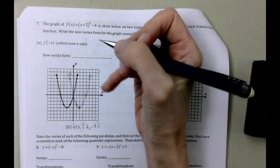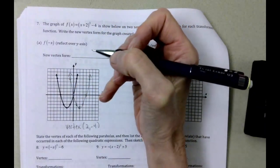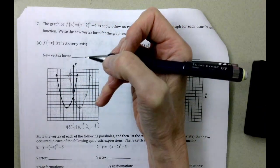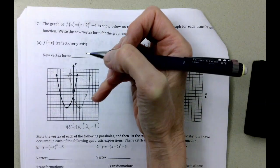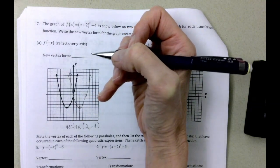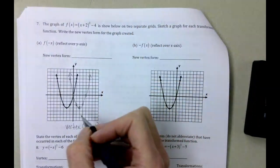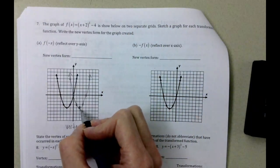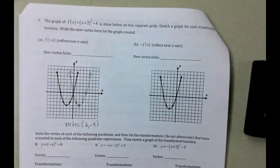So when we write this equation here, I know that it says reflect over the y-axis. But we don't even really need that in the problem, because we can write the equation of this graph without writing reflect over the y-axis in there.